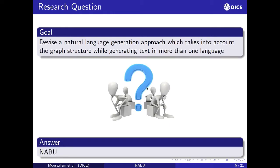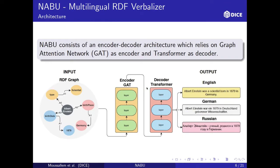The answer to this is NABU. We devised NABU as an encoder-decoder architecture which relies on graph attention neural networks as an encoder and a transformer as a decoder. Here we can see the architecture of NABU: on the left side we have the RDF graph as input, then it goes through the graph attention neural networks, then through the transformer, and then generates English, German, and Russian as text.